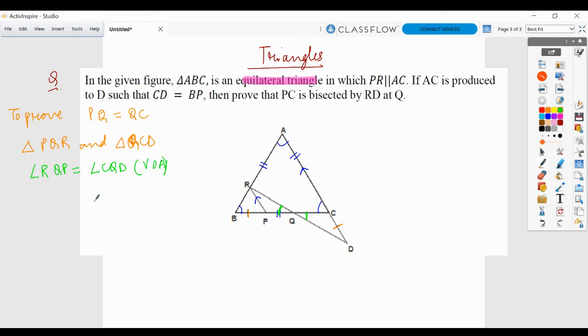The second element, let's use the parallel lines here. So if RP is parallel to AD, so we can say that angle PRQ is equals to angle CDQ by alternate interior angles.